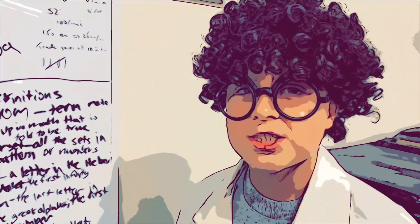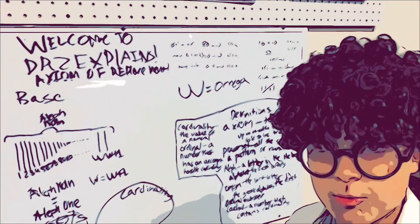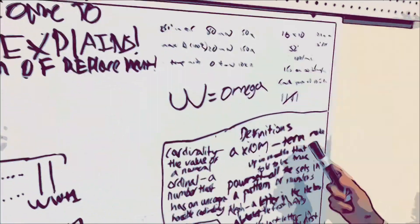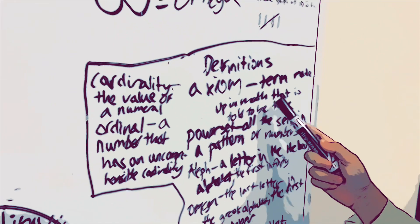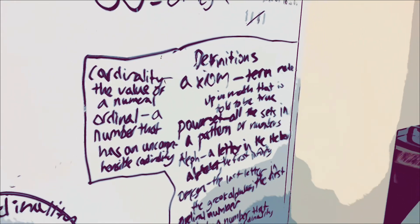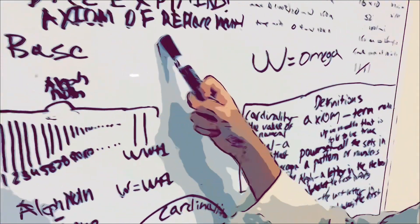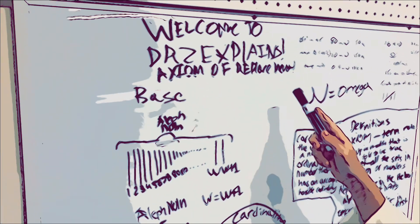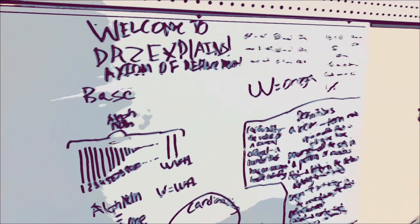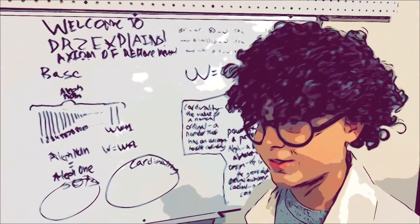Welcome to Dr. Z Explains. Yes, we're going to count past infinity. It's a term made up in math that is told to be true. The axiom replacement is what we're going to do to count past infinity.